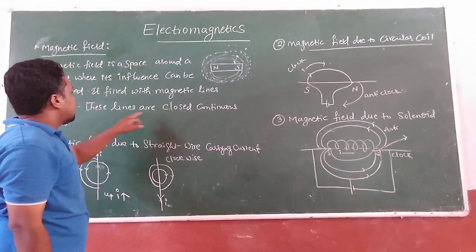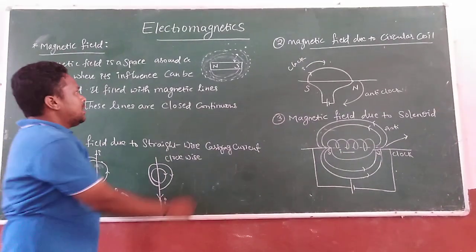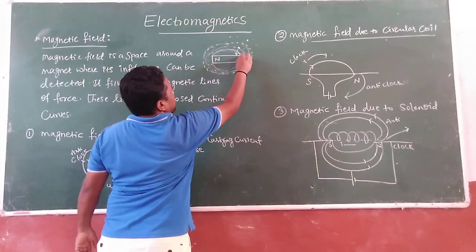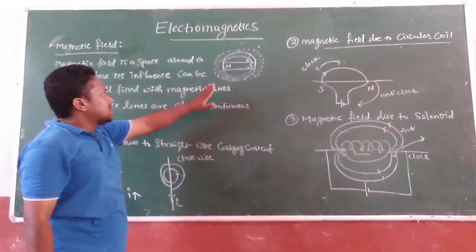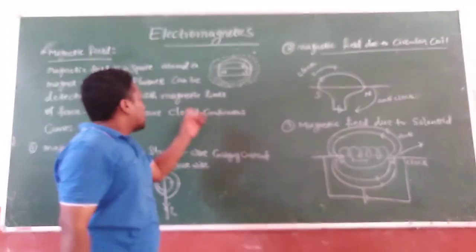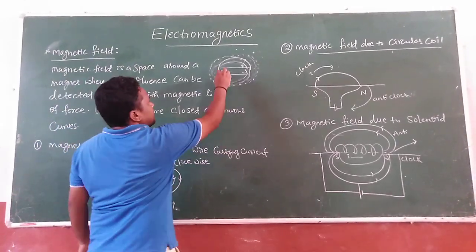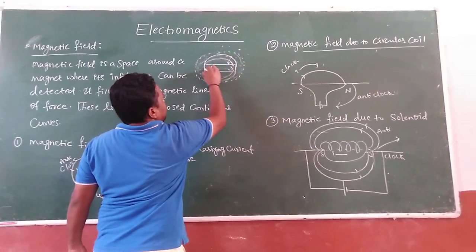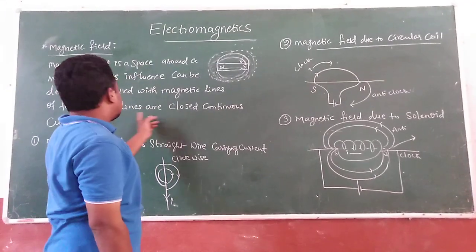These lines are closed and continuous curves. This is very important — all these magnetic lines are closed and continuous curves. Closed and continuous curves — the magnetic field lines are always closed and continuous curves, meaning they are in the form of a closed loop and continuous.